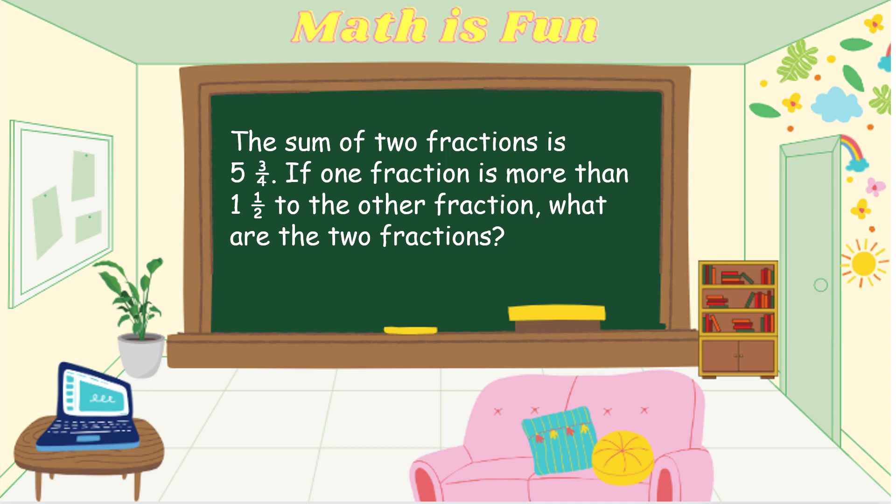We need to analyze this problem carefully. There are two fractions. If we add them, the answer equals 5 and 3 fourths — the sum is given, but we don't know what the individual fractions are. The difference between the two fractions is 1 and 1 half, meaning one fraction is more than 1 and 1 half greater than the other.